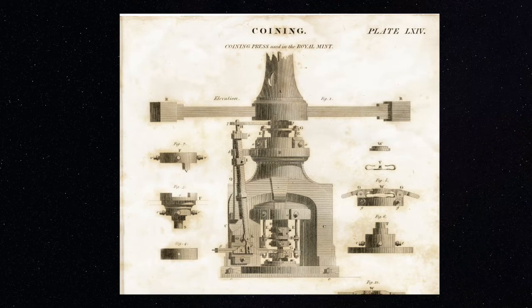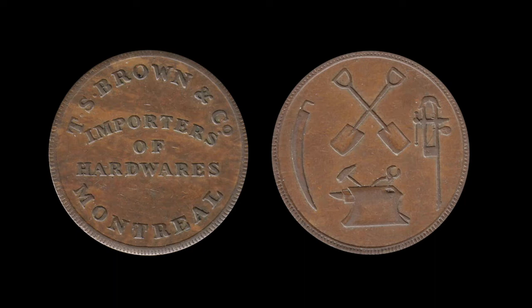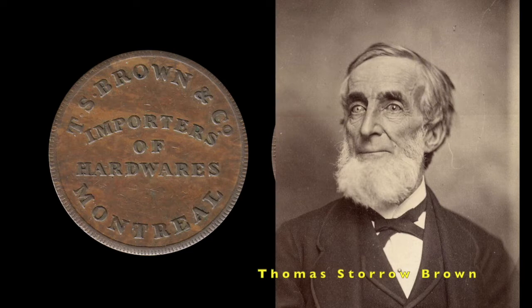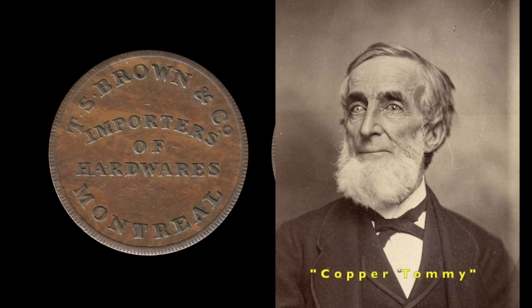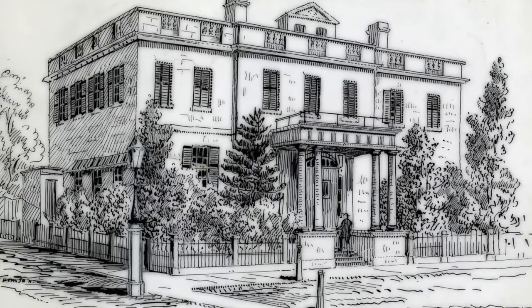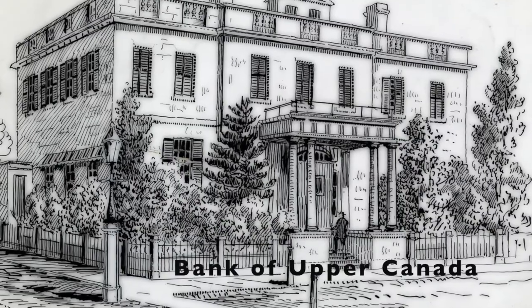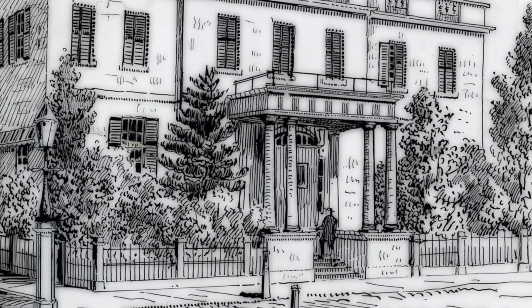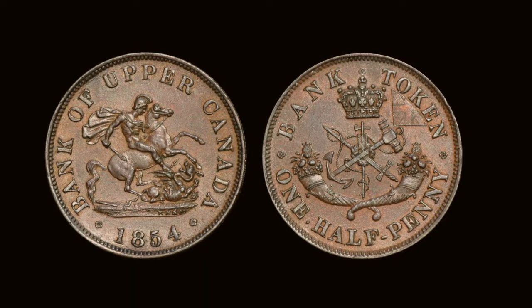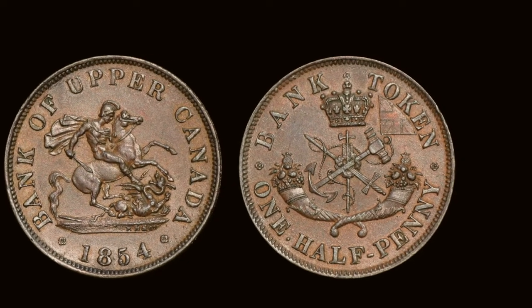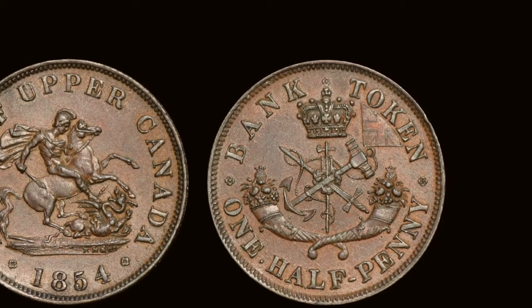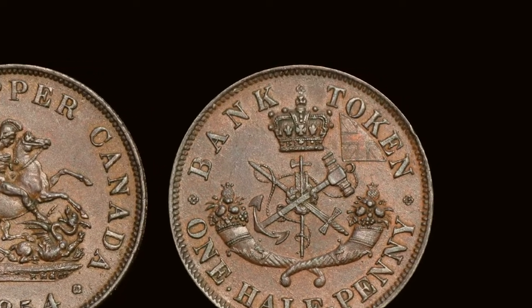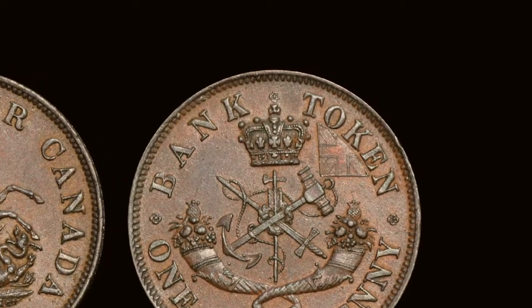This particular half-penny token was issued by the hardware firm of Thomas Storro Brown. Even though it was heavier than most of the lightweight copper in circulation in Montreal at the time, one of the Montreal newspapers denounced Brown's tokens as a profiteering scheme. In the wake of this scandal, Brown acquired the nickname 'Copper Tommy.' In Canada West, as Upper Canada was then known, it was the Bank of Upper Canada that issued full weight tokens. Its head office from 1827 until the bank's collapse in 1866 still stands on Toronto's Adelaide Street. These tokens had such privileged status that they circulated almost as though they were a government currency, though they include the word 'token' in their legend.